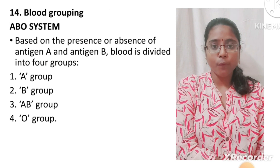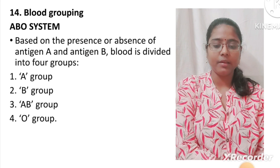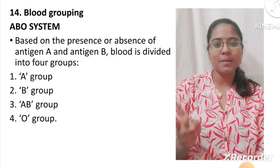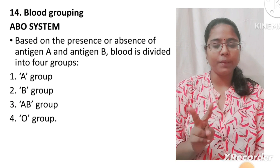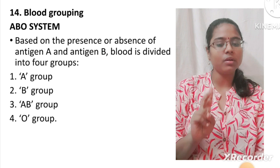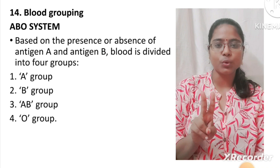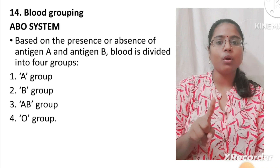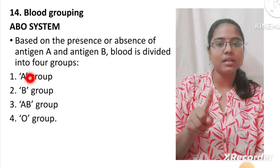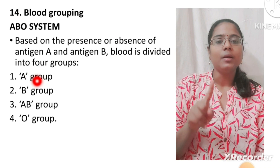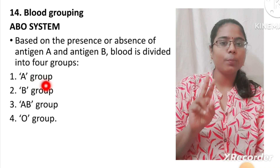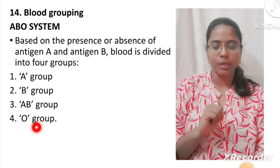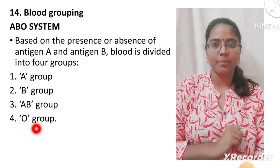Question number 14: What is blood grouping? There are two systems in blood grouping: ABO grouping and RH grouping. In the ABO grouping system, there are four blood groups: A group, B group, AB group, and O group.